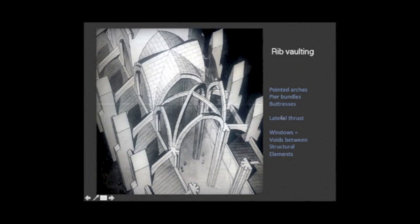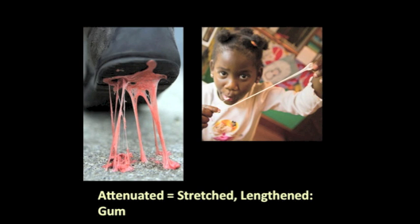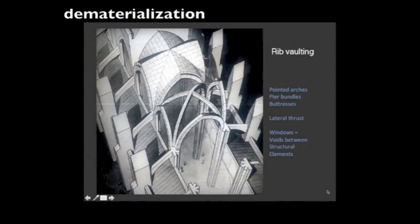Attenuated means stretched out — think of something like taffy, or gum. You have this solid lump of gum, and you stretch it, and the condition of this solid mass transforms into something linear, something transparent, something spindly. And that is the ambition in Gothic architecture. This desire for lightness, verticality, and dematerialization is made possible by the introduction of different structural systems than those used during the Romanesque period.